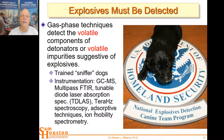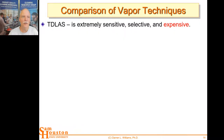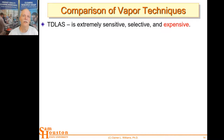Tunable diode laser absorption spectroscopy is extremely sensitive, but it's very expensive. And because it's so sensitive, it may only detect certain types of explosives. You could tune it to detect only PETN, but then it might miss nitroglycerin or beta-HMX. It may be too selective, and it's also expensive, so you need to make sure it matches the profile of what you're likely to find — otherwise you're going to miss something.